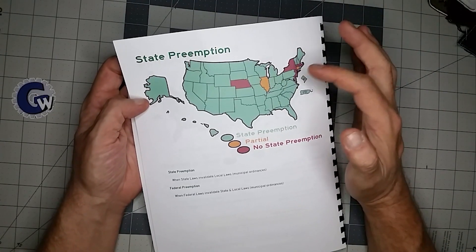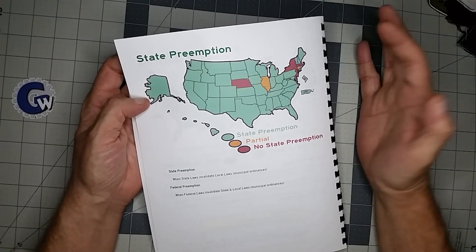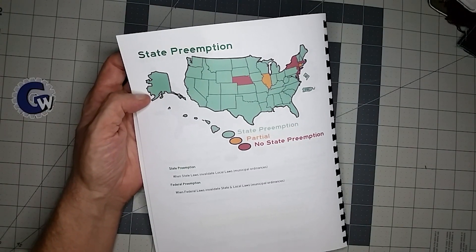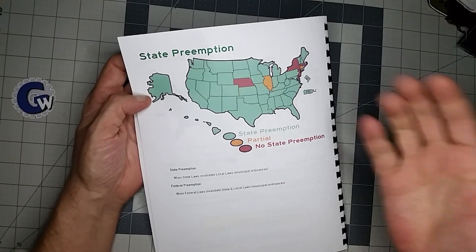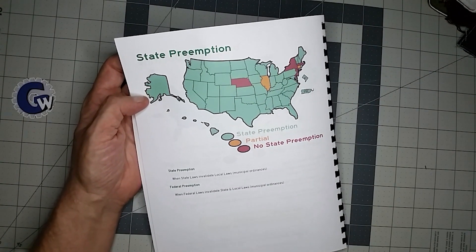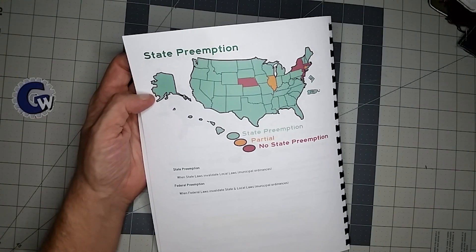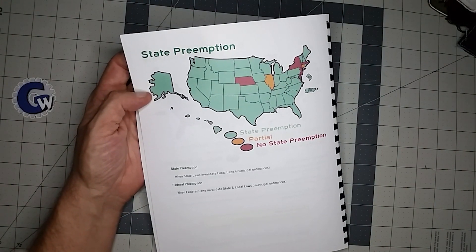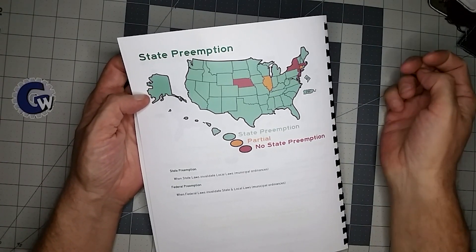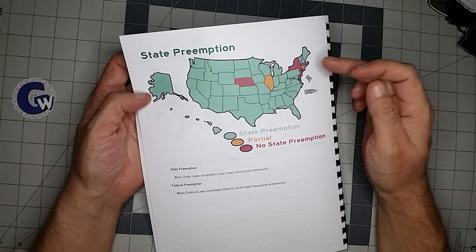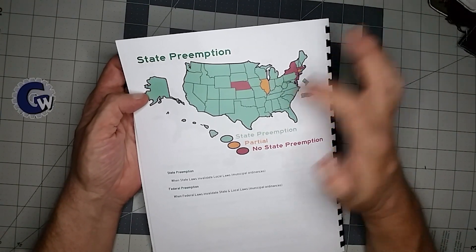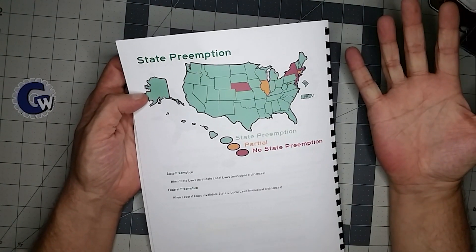Every once in a while, you get a state that does not have state preemption, so that cities can create their own laws. It makes things a little more confusing for travelers because the laws aren't going to be consistent throughout the whole state. You can see that most of the states do have preemption at this point, and then a couple of the states in New England have no preemption, and Nebraska for some reason as well.